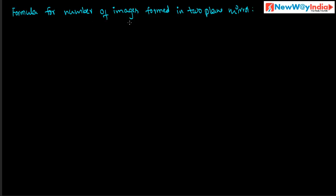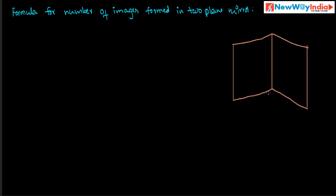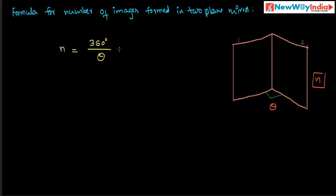Let us discuss the formula for the number of images formed in two plane mirrors. If you place two plane mirrors together with some angle of inclination theta between them, how many images will be formed? Let the number of images formed be n. The formula is: n = 360° ÷ θ − 1.